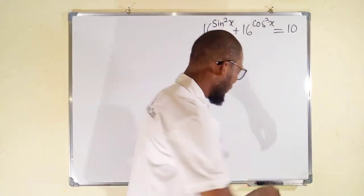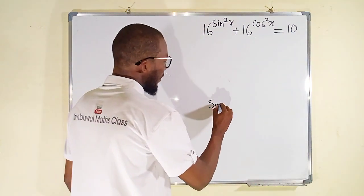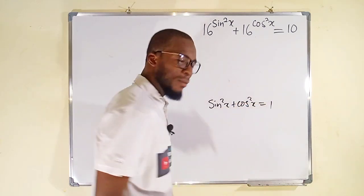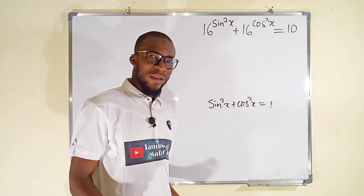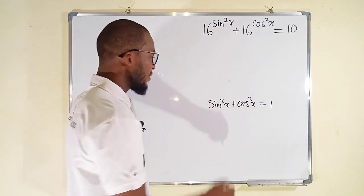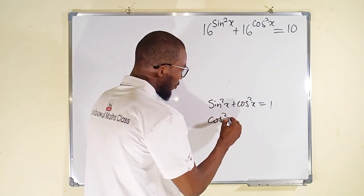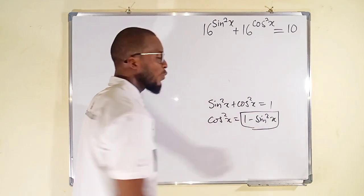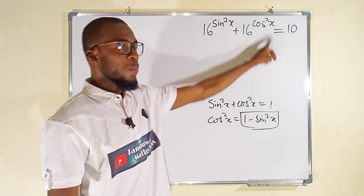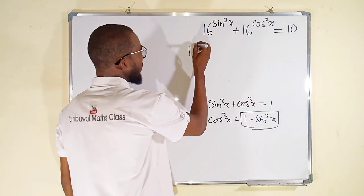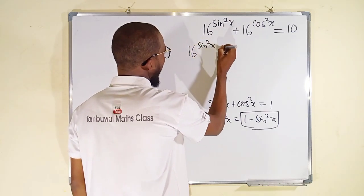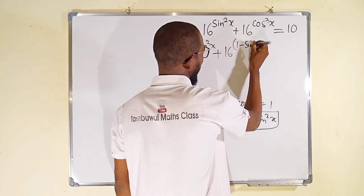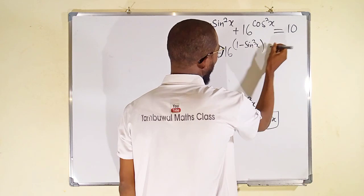Before we start, let us recall this identity that says sine squared x plus cos squared x is equal to 1. We can write cos squared x in terms of sine squared x, so cos squared x is equal to 1 minus sine squared x. We can write 1 minus sine squared x instead of cos squared x, so this becomes 16 raised to the power of sine squared x plus 16 raised to the power of 1 minus sine squared x, and to the right we have 10.